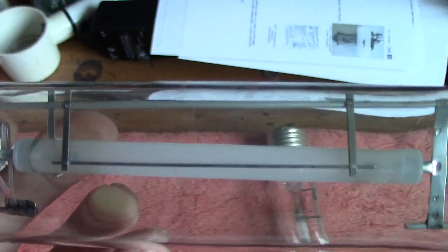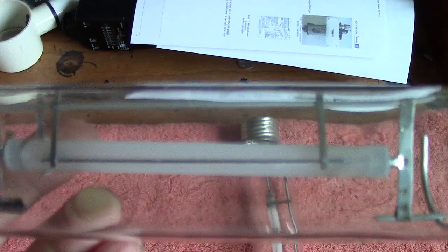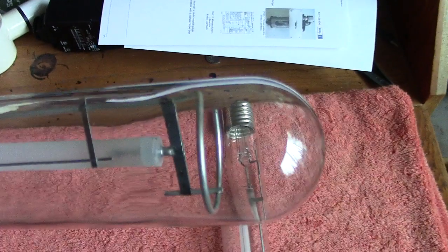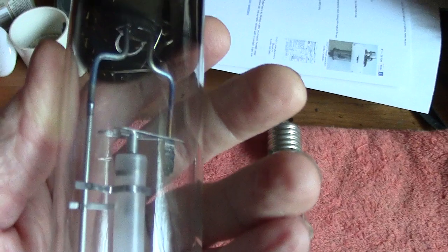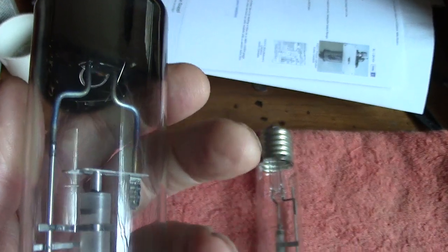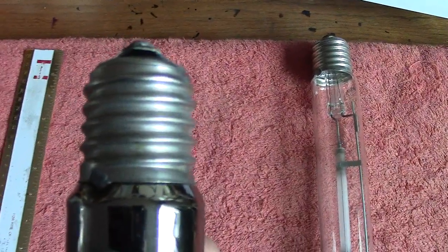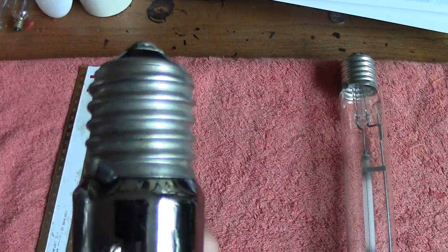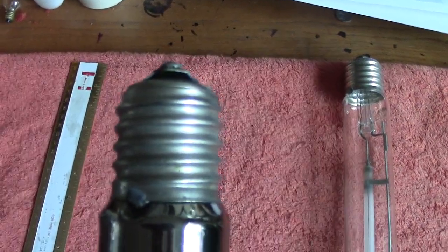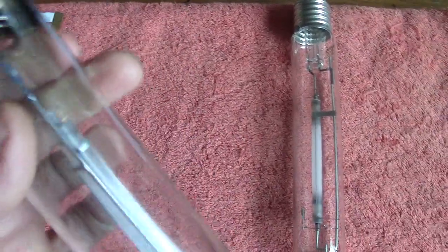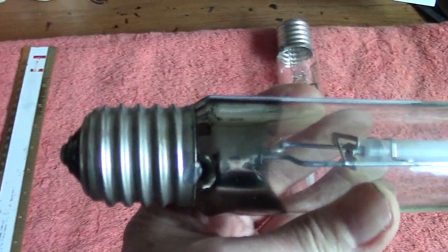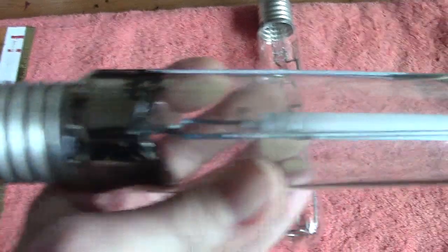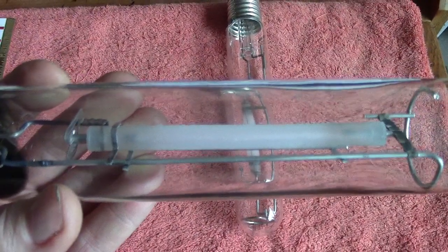Once again, same idea: the arc tube has that metal strip down there which aids starting. This does produce a little bit of redness in the color—you'd probably not notice it, but it does. The cap is a GES or mogul—Goliath Edison Screw. They do need starter gear and chokes or a ballast to use them. Don't ever screw it into a normal lamp holder or mains; if you did, there would be an almighty bang and the lamp would be completely destroyed.